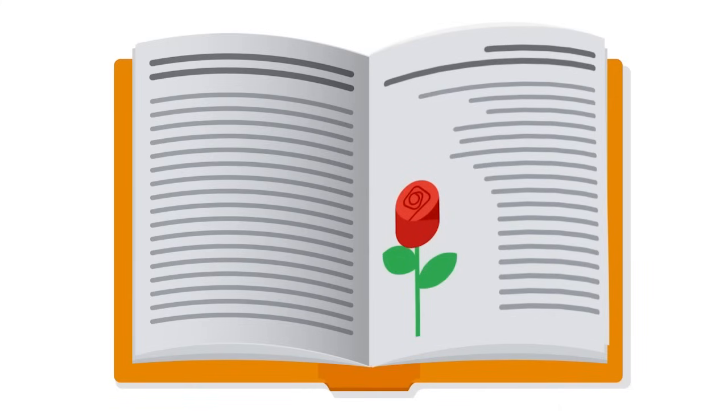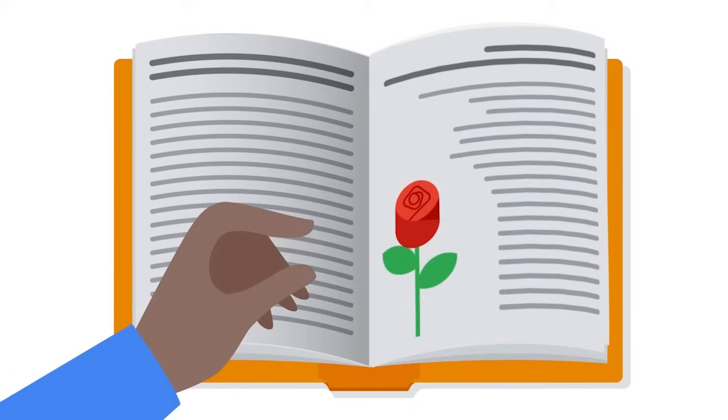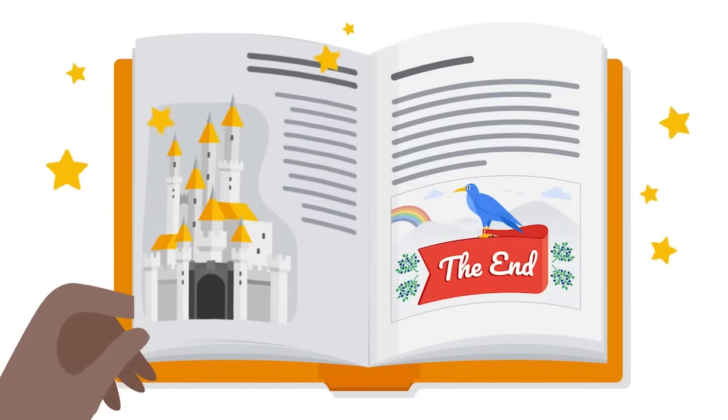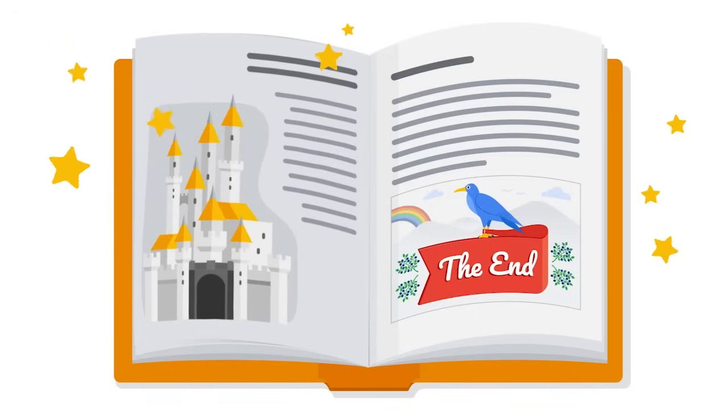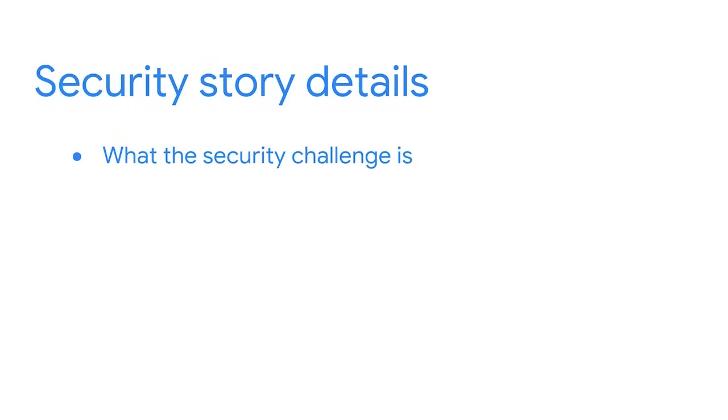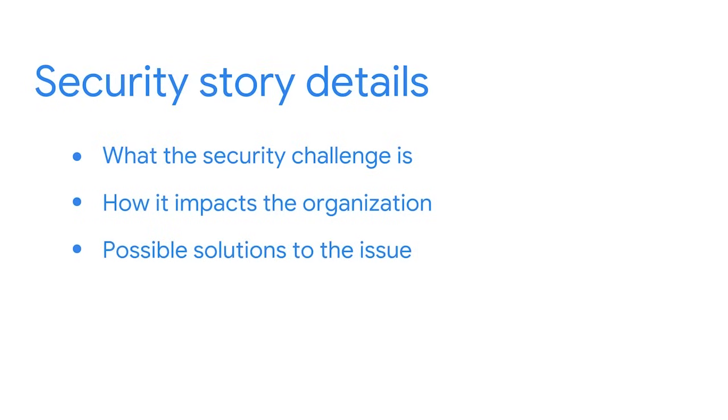Previously, we discussed communicating information that is important to stakeholders. It's essential that communications are specific and clear so stakeholders understand what's happening and what actions may need to be taken. Creating security communications to share with stakeholders is similar to telling a great story — stories typically have a beginning, middle, and end with some sort of conflict and an eventual resolution. This concept is true when telling security stories to stakeholders. The security story details what the security challenge is, how it impacts the organization, and possible solutions to the issue, including data related to the challenge, its impact, and proposed solutions.